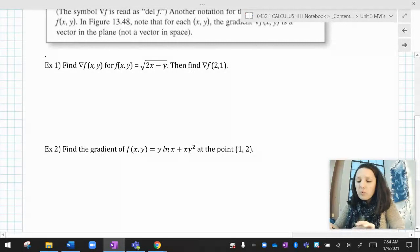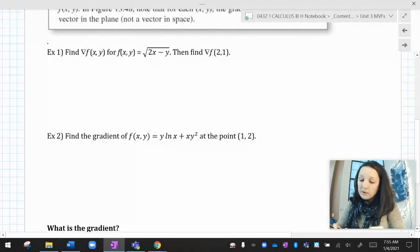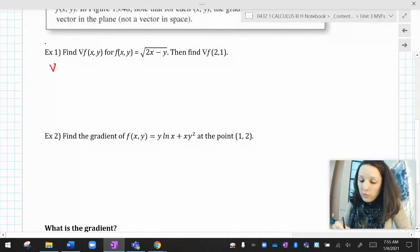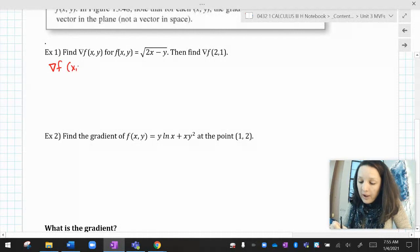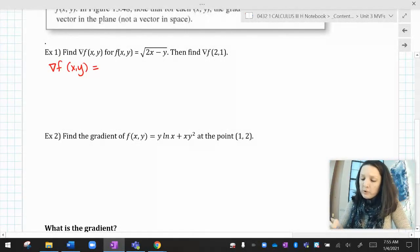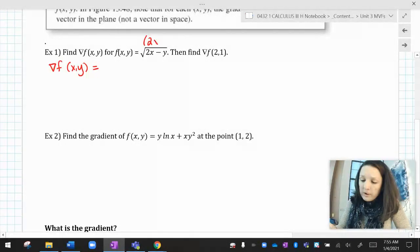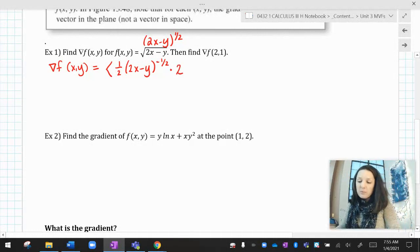So if I wanted to find the gradient of f(x, y) for the function radical 2x minus y and then evaluated it to 1, I'm just going to follow the rule at first, and we'll talk about what that rule gives us in a little bit. So if I wanted to find grad f of x, y, I need to take my partial derivatives. So the derivative of 2x minus y to the 1/2 with respect to x is going to be bring down the power, reduce it by 1, multiply by the derivative of the inside with respect to x.